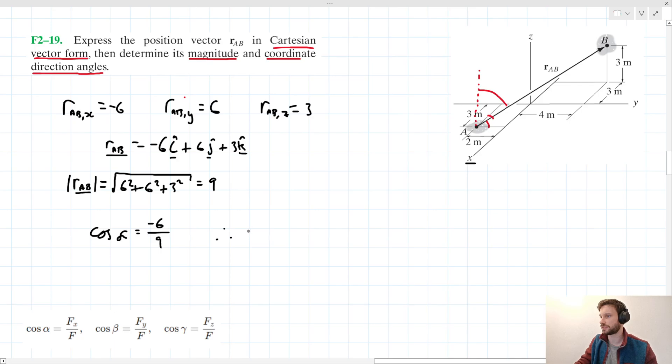We can therefore say that α in this case equals - if we take the inverse cos of both sides - α equals cos⁻¹(-6/9). When we put this in the calculator, we get a value of approximately 132 degrees.